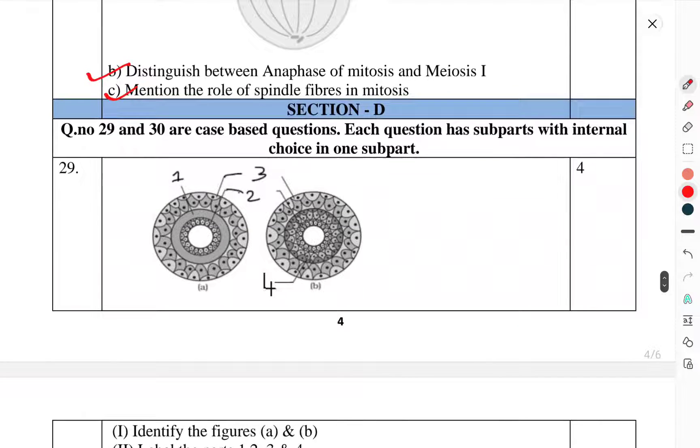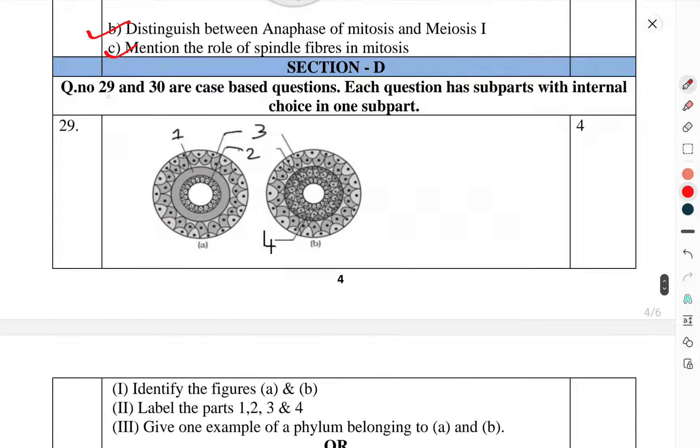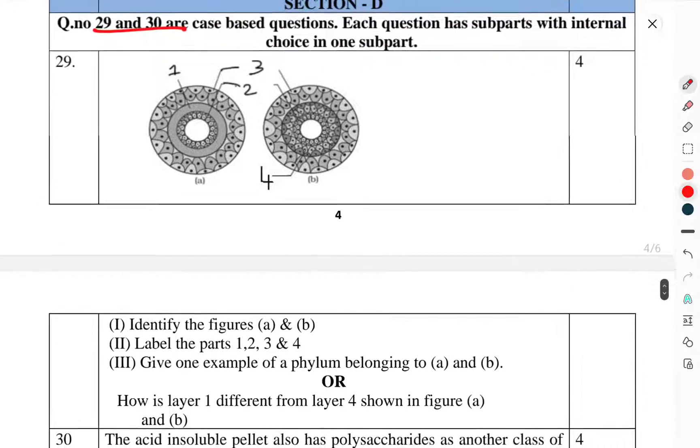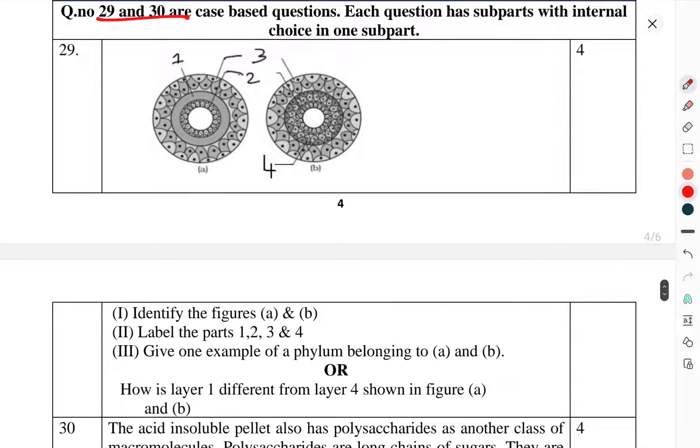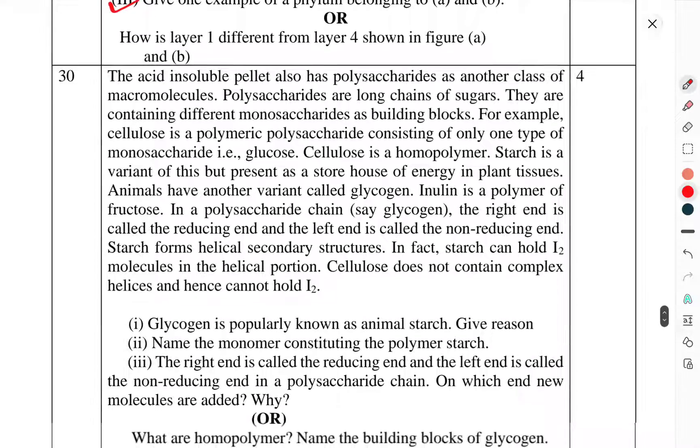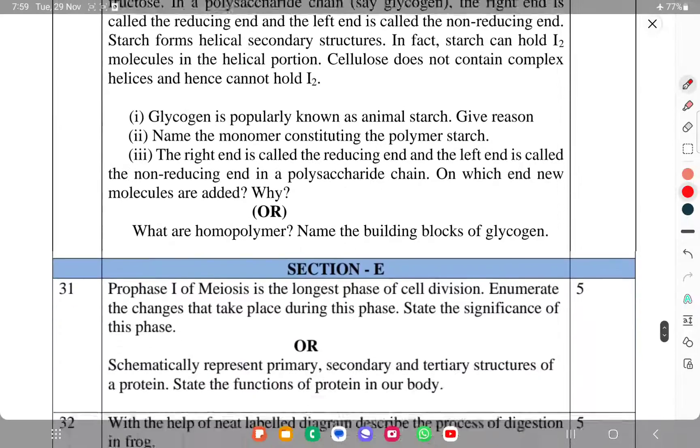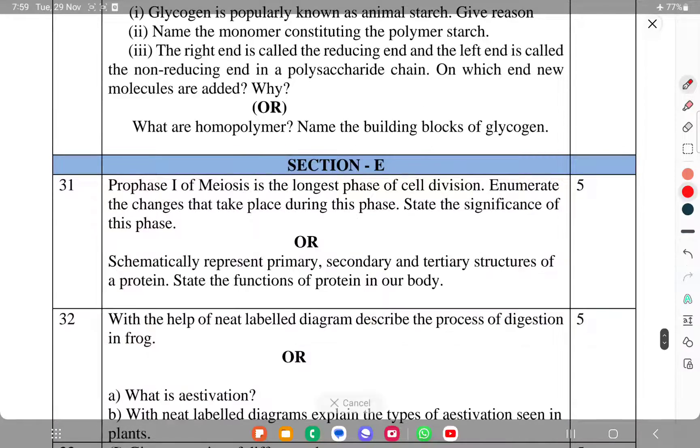Section D. Our case study questions, 29 and 30. Each question has subparts and internal choice in one subpart. These are case study questions. Question 29: You have to see this figure A and B, label 1, 2, 3, 4, and give an example of phylum belonging to A and B. Question 30: You can read it. This is a study-based question. You read it and understand what is given, and then answer.